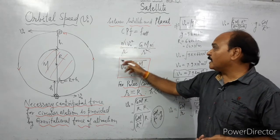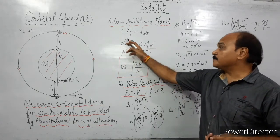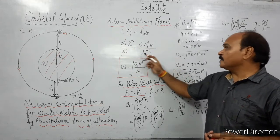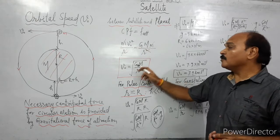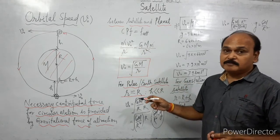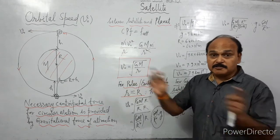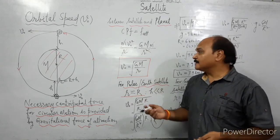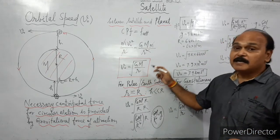We can see that one power of r cancels out and the mass of the satellite cancels out. We get v₀² = GM/r, or v₀ = √(GM/r). So orbital speed does not depend upon the mass of the satellite, and its value is √(GM/r).